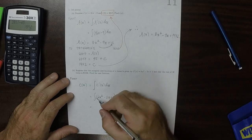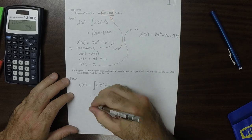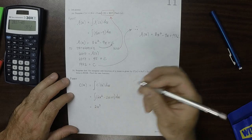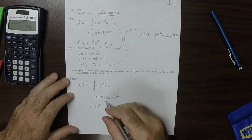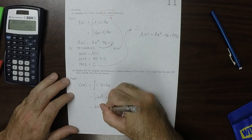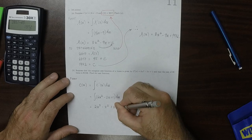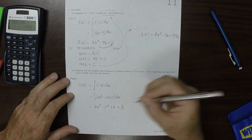So we'll anti-differentiate this. So the new exponent will be 3, and then divide by 3. So that's 2x cubed, and then minus x squared, and then plus x, and then plus some unknown constant, which I'll write as k.